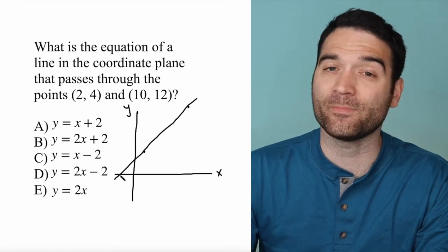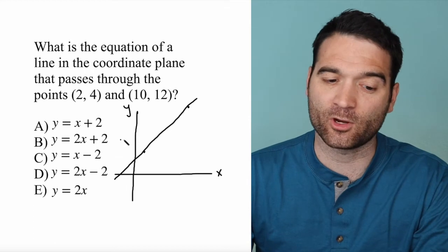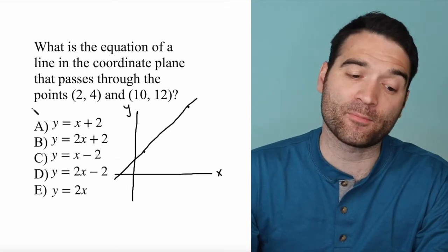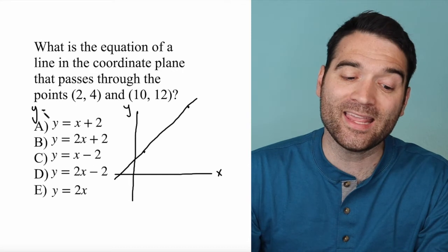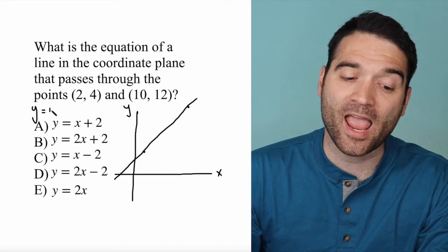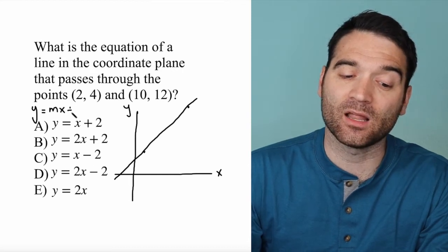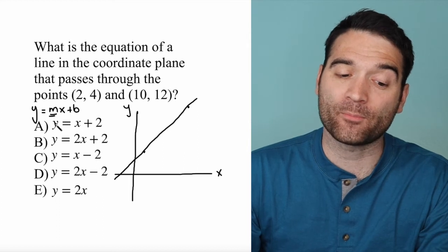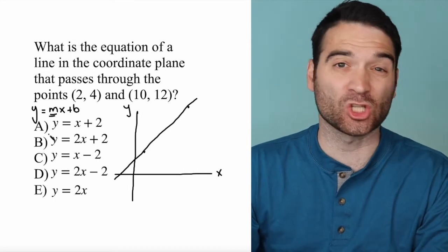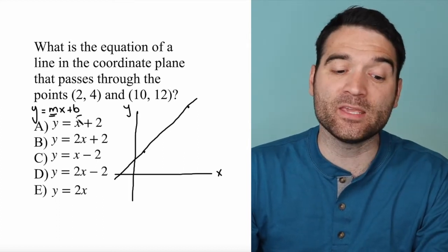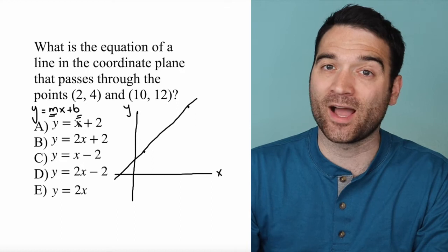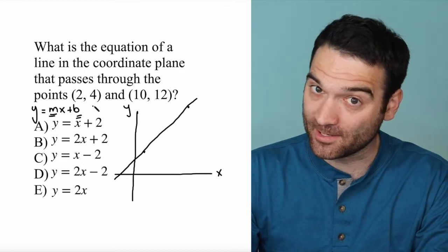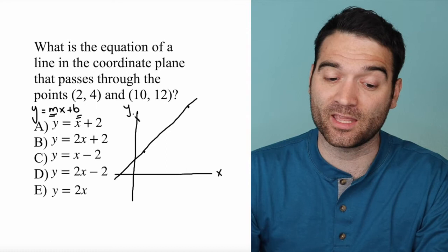Let's remind ourselves what a linear equation looks like. A linear equation can be represented in the form y = mx + b, where m represents the slope of a line and b represents the y-intercept. We can very easily calculate the slope of this line with the points we've been given.